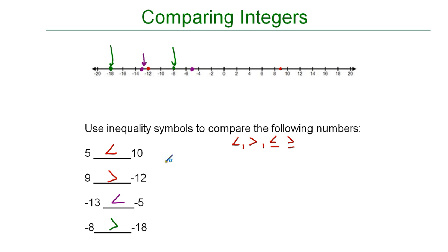So when you're comparing negative numbers, you want to think of the opposite. If it looks like it's the larger number and it's negative, it's actually the smaller number because it's farther away from 0 on the number line.